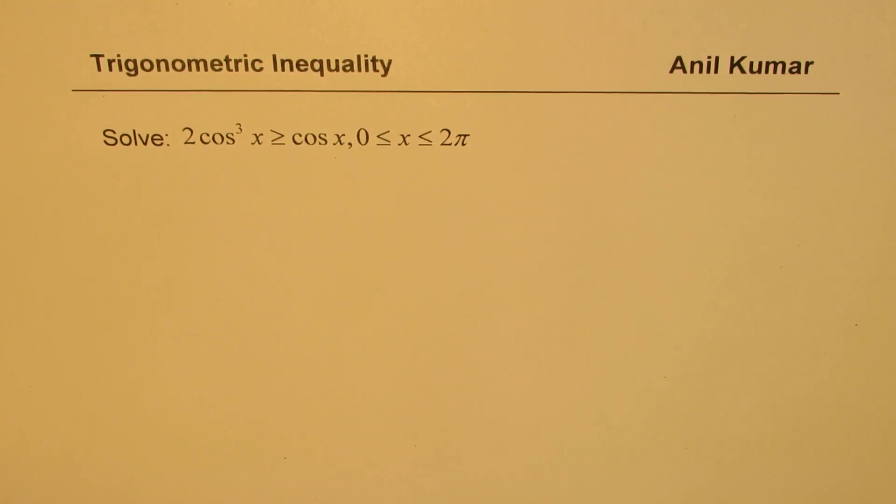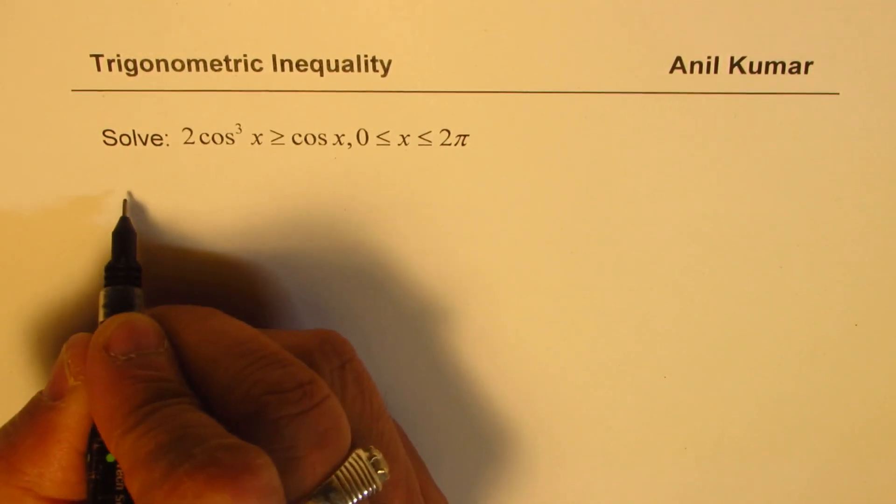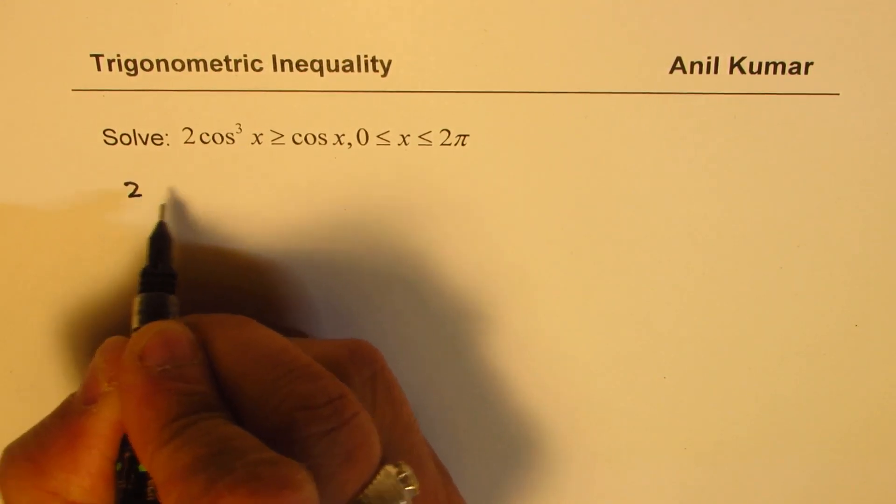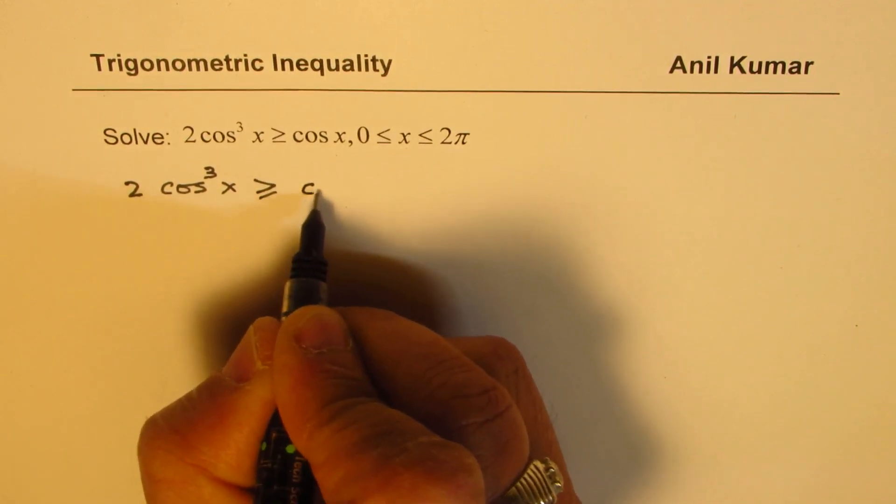You can always pause the video, answer the question and then look into my suggestions. So let's bring the terms together. The inequality is 2 cos³x ≥ cos x.